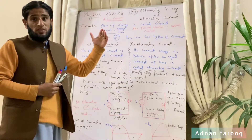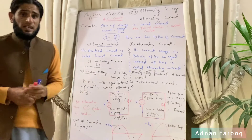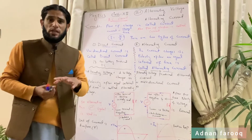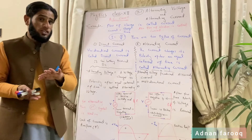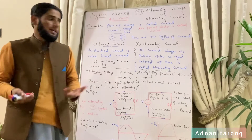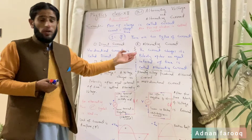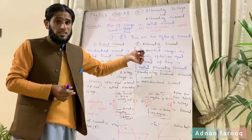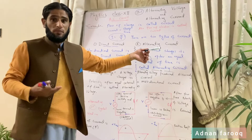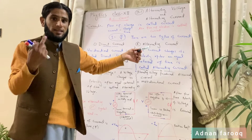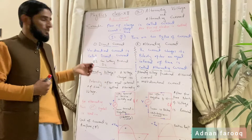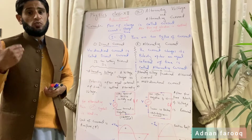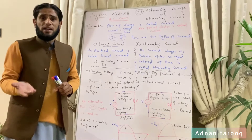Alternating current اور alternating voltage کیا ہے؟ جو اپنی polarity change کرے اسے alternating source کہتے ہیں — ایسا current جو اپنی direction کو change کرے اسے alternating کہتے ہیں۔ The current changes its polarity after an equal interval of time — known as alternating current. The voltage changes its polarity after an equal interval of time — known as alternating voltage.